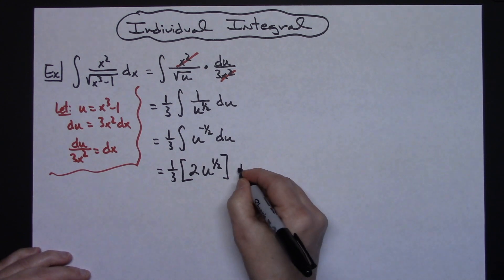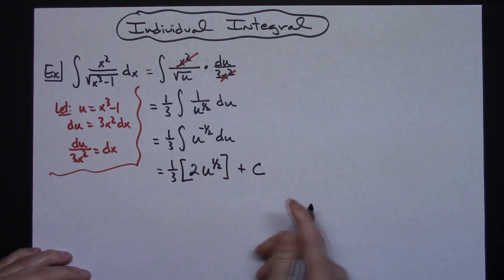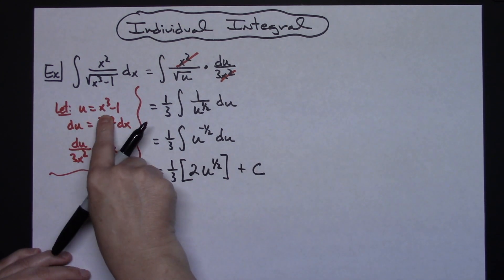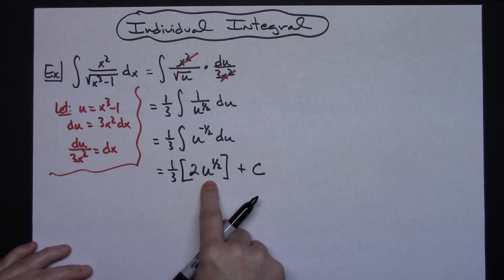We've completed the integration, so now we can add our +C. The last step would be to replace u with what we said it was equal to. We can multiply these two things and convert that back to a square root.